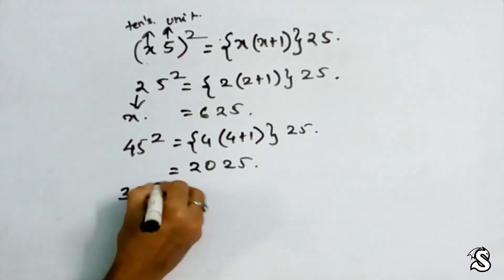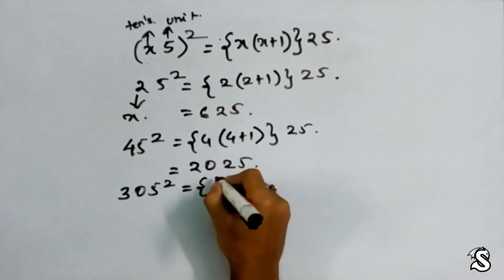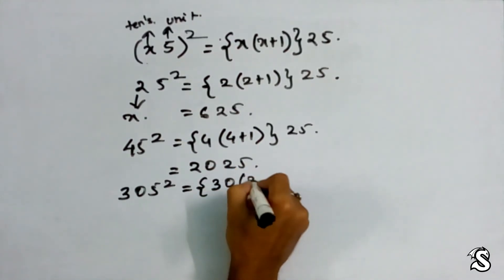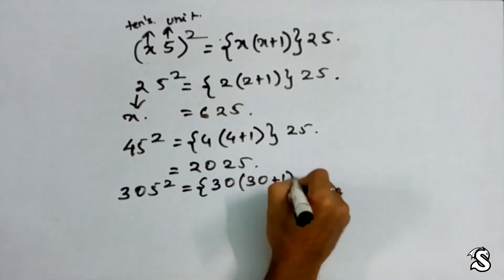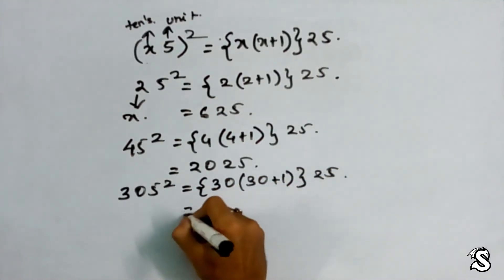I am going to take another example like 305 square, which is going to give 30 into 30 plus 1, and the last two digits are 25. So it is 93025.